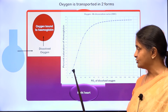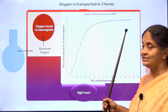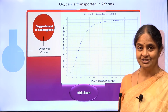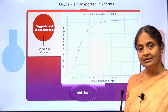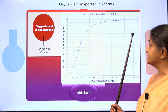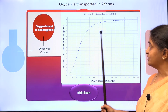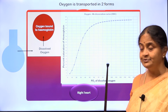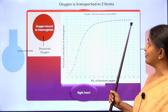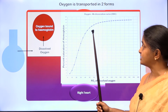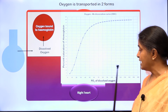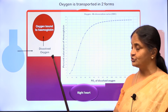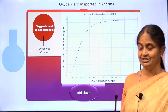The relationship between dissolved oxygen and oxygen bound to hemoglobin is what we study as the oxygen-hemoglobin dissociation curve. One might also think of it as the oxygen-hemoglobin association curve, but the general term is the oxygen-hemoglobin dissociation curve, which describes how much oxygen dissociates from hemoglobin as the partial pressure of dissolved oxygen reduces.